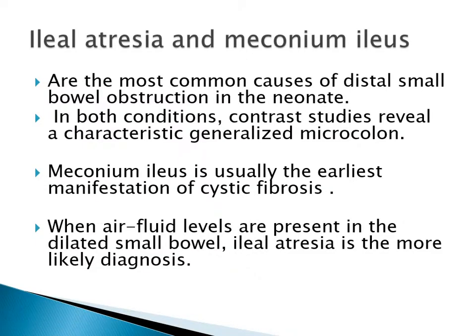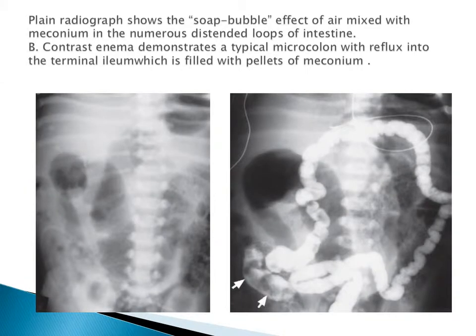Ileal atresia and meconium ileus are the most common causes of distal small bowel obstruction in neonates. In both conditions, contrast studies reveal a characteristic generalized microcolon. Meconium ileus is usually the earliest manifestation of cystic fibrosis - the meconium is very thick and difficult to evacuate, staying in the small bowel, so the colon is not used, resulting in microcolon. A plain radiograph shows a soap bubble effect of air mixed with meconium and numerous distended bowel loops. Contrast study demonstrates typical microcolon with terminal ileum filled with pellets of meconium.